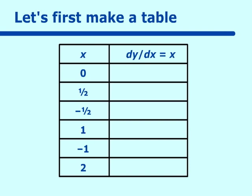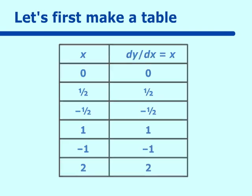When we find dy/dx, we just say: if the value of x is zero, then dy/dx is equal to zero. If x is equal to one half, dy/dx is equal to one half, and so forth all the way down. So we get this little table of values, and we are going to graph their slopes.